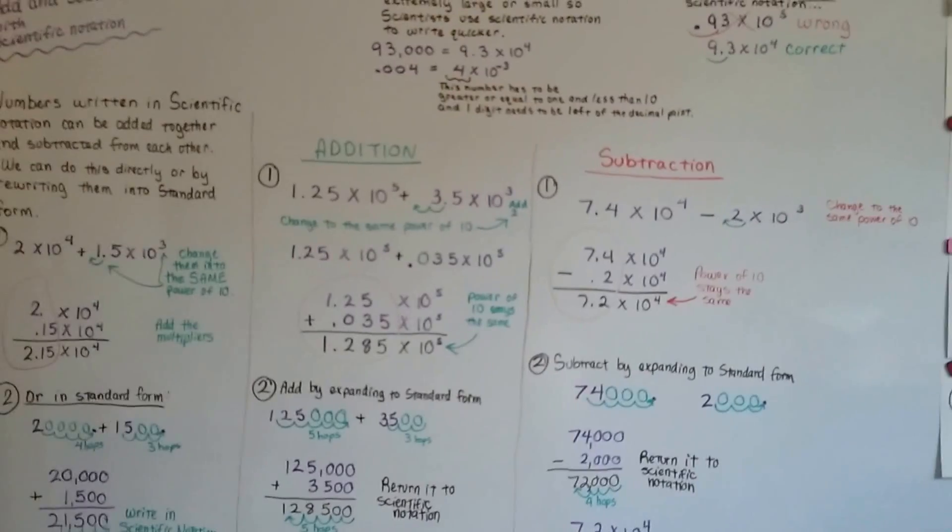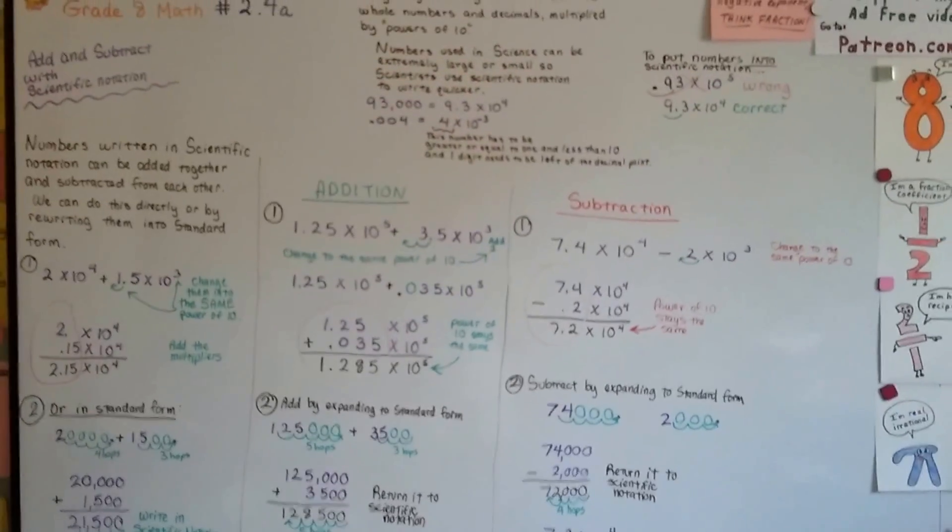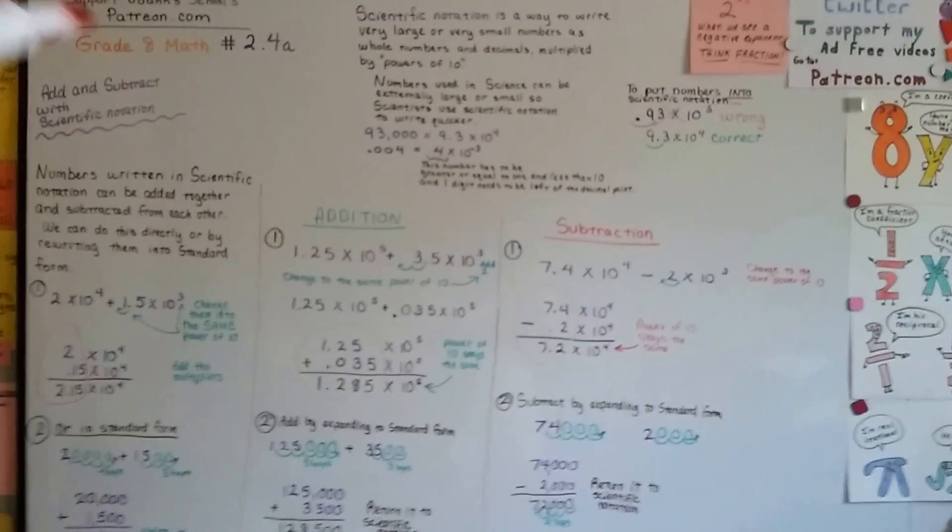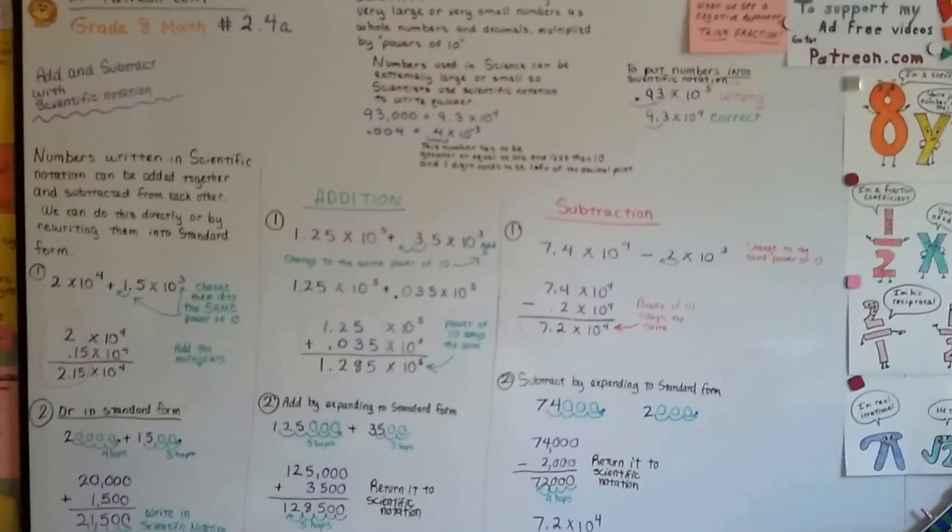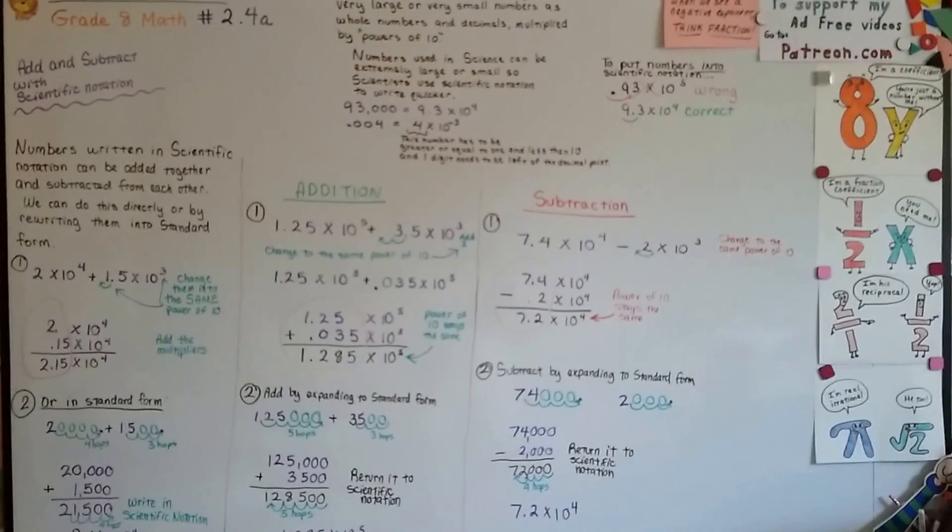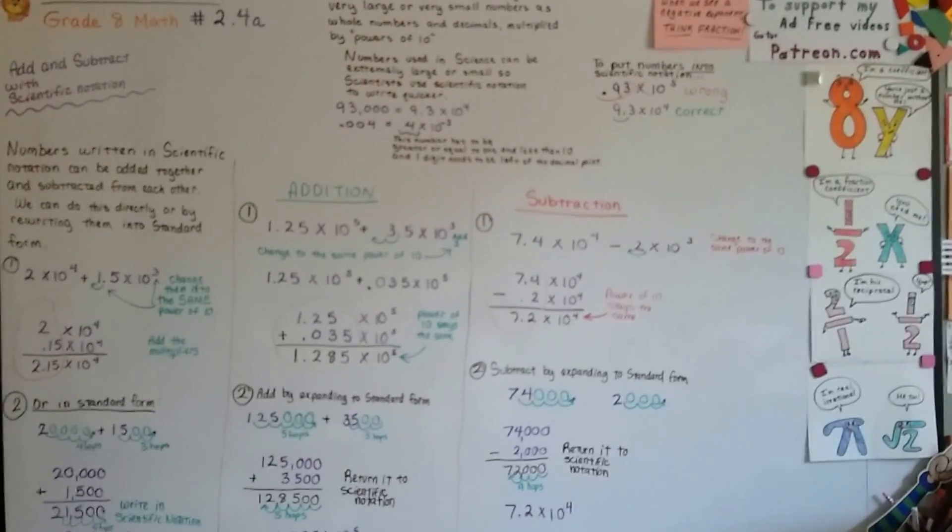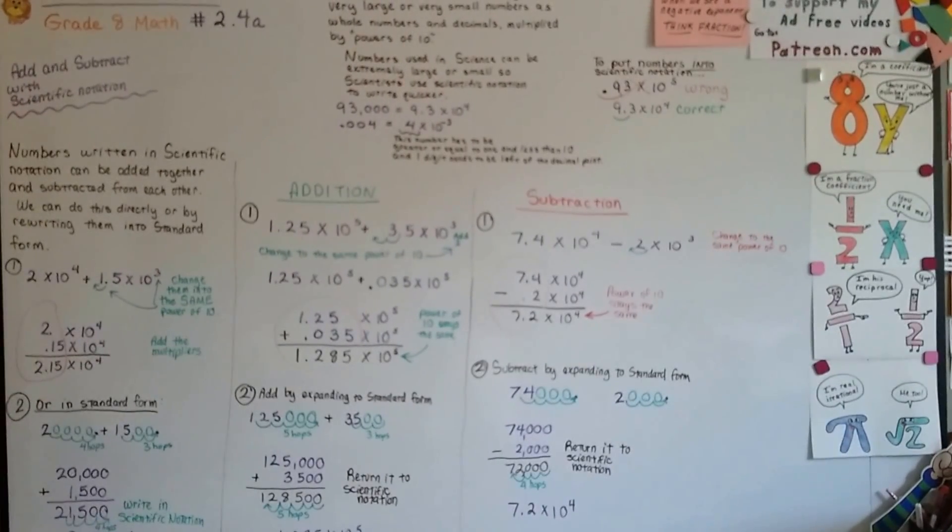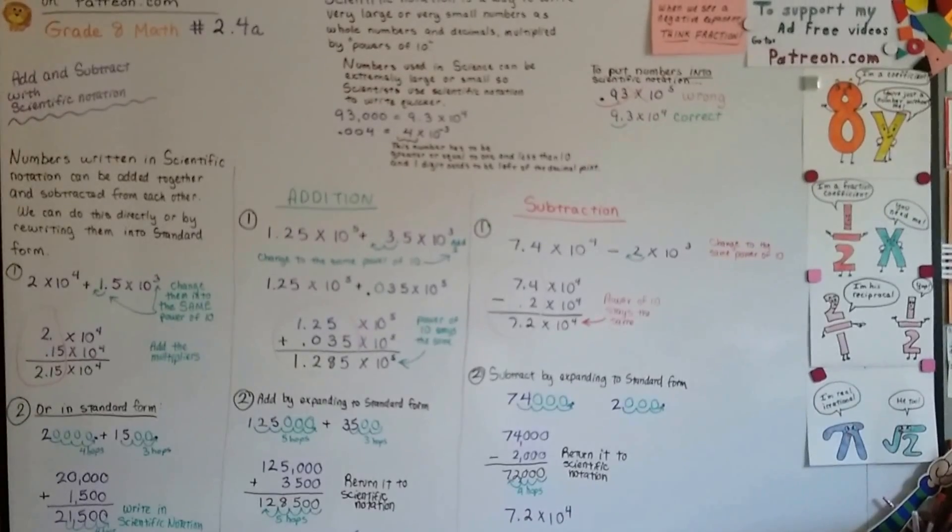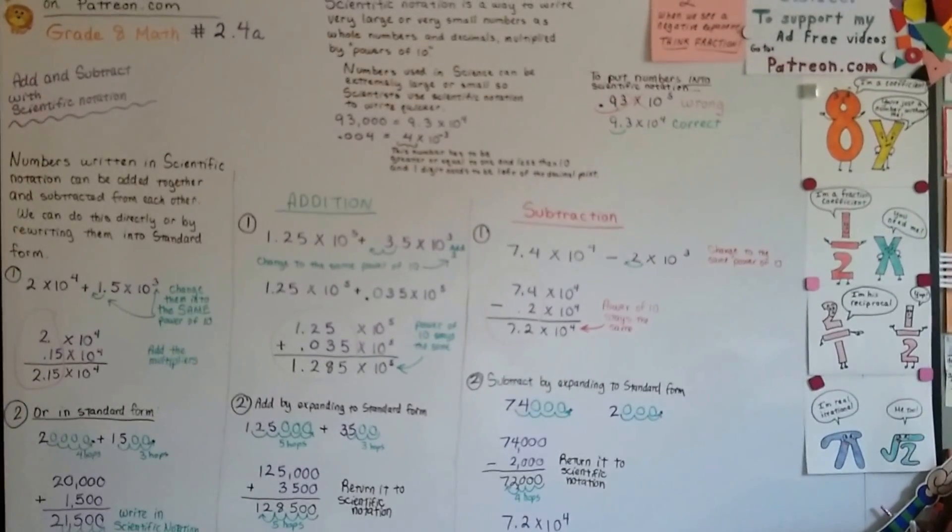So if you're really confused about this scientific notation, my advice is to go back to Unit 2.3. I did a lot of videos on scientific notation there, and it's in the same playlist as this video, and hopefully that'll help you. But I think you might be alright. I'm going to talk about multiplication and division with scientific notation in the next video. See you there. Bye.